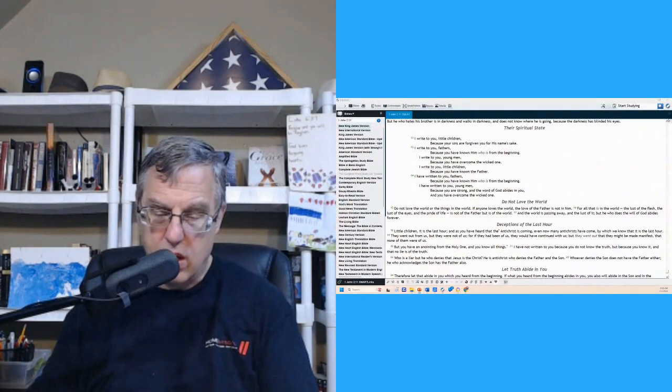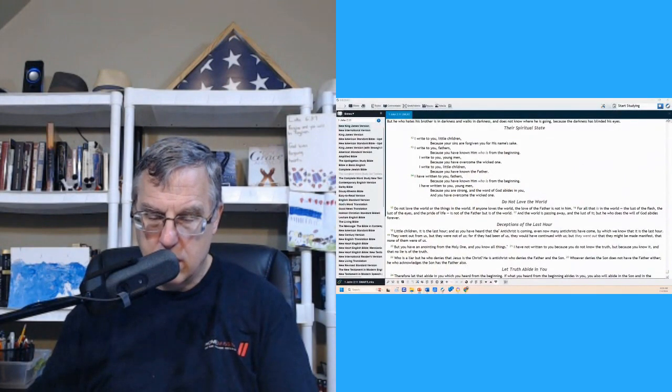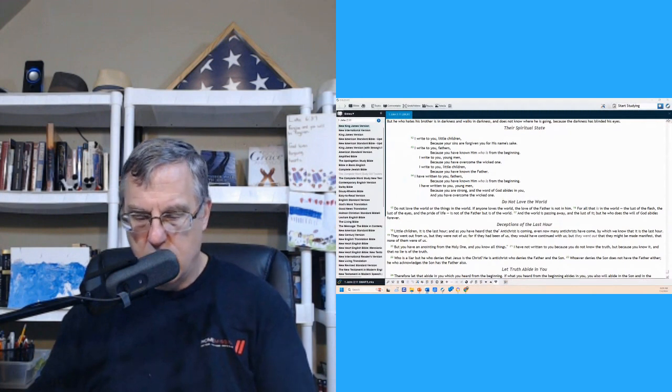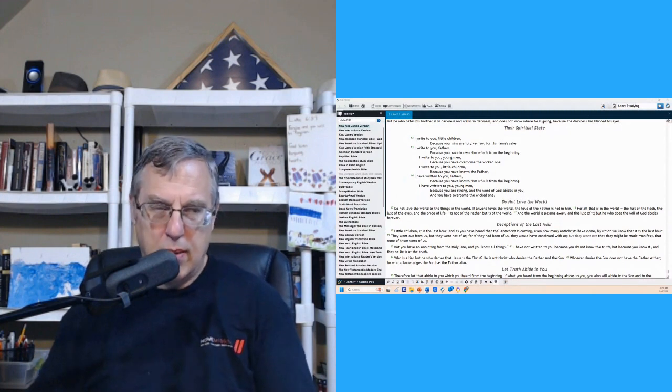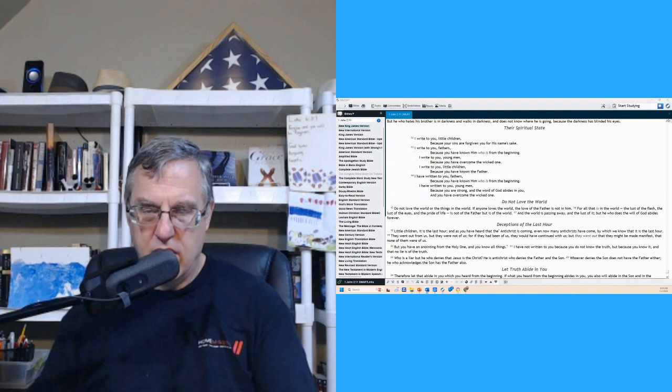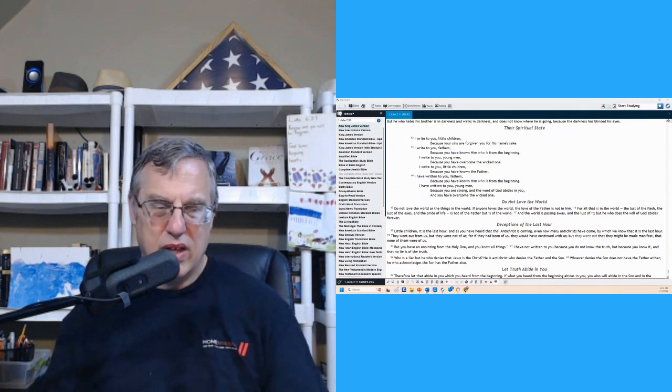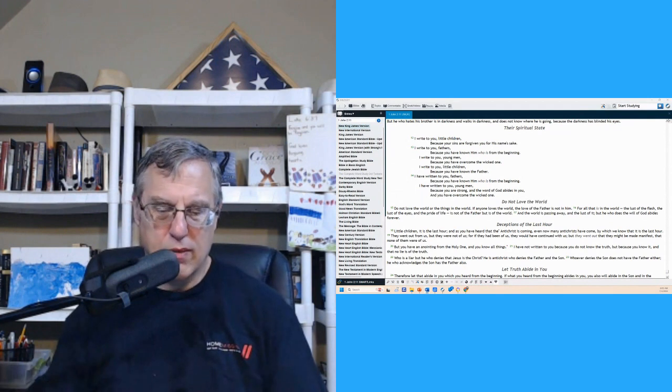This is getting towards the end of John's life, the end of the first century. John was probably written around 90 A.D., the three letters and the Gospel. I tend to lean towards earlier dates for all the New Testament documents with the possible exception of Revelation.